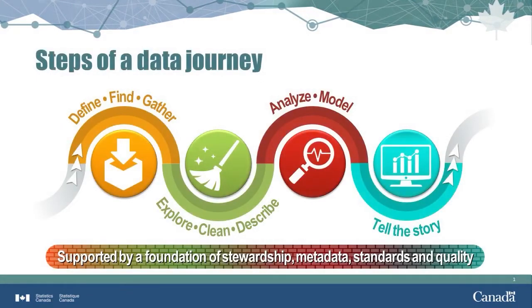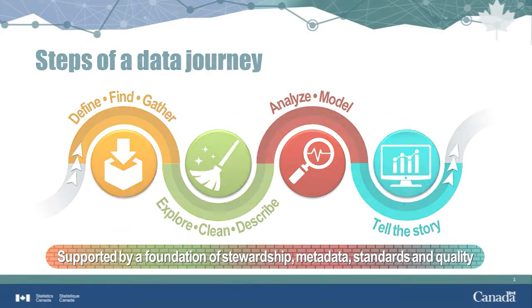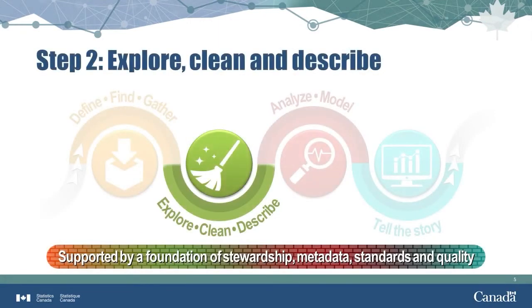This diagram is a visual representation of the steps involved in turning data into knowledge. Accurate data correctly describes the phenomena they were designed to measure or represent. Before we use data, we should explore it to learn about the variables and concepts, and also to discover if there are errors, inconsistencies, or gaps in the data. This video looks at ways to explore the accuracy of data.